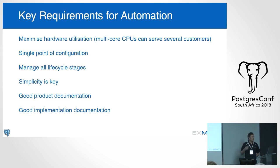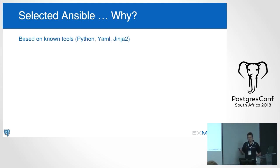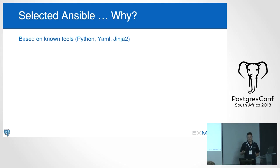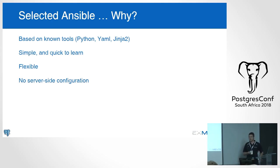We needed good product documentation and the scripts we write needed to be well documented too, because it helps if you can read a script three months after you've written it. We selected Ansible for this task because it was based on tools we already knew: Python, YAML, and Jinja2 templates — the stuff we already use in the Django environment and in our scientific computing.